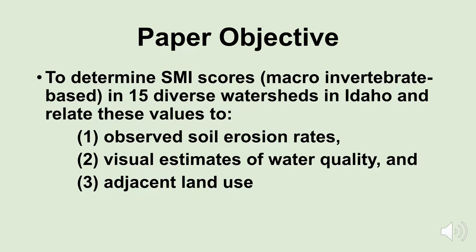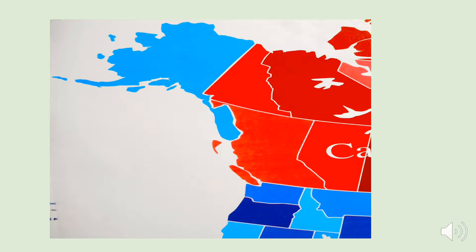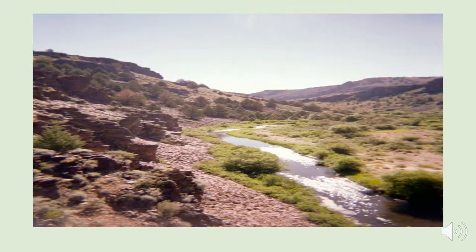So let's take a look at what we did in Idaho. Here's a picture of the Pacific Northwest part of the country. Here's our state of Idaho, and we had 15 stream sites in Idaho — most of them are in the north — that we were trying to relate benthic macroinvertebrate scores to visual things like soil erosion rates, land use, and things like that.